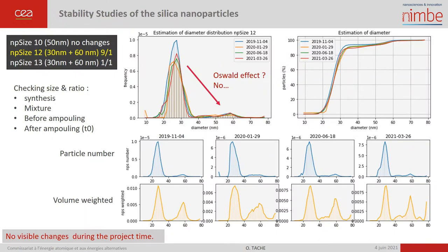We regularly measure the stability of the samples. For NP size 10, very monodispersed silica particles, no variation was observed. We used the sample on many SAXS instruments, both in the laboratory and on synchrotron beamlines. For NP size 12 at a 9 to 1 ratio, we had some fear of the Ostwald effect — meaning the smallest particles could aggregate to the biggest or disappear — but we did not observe that.